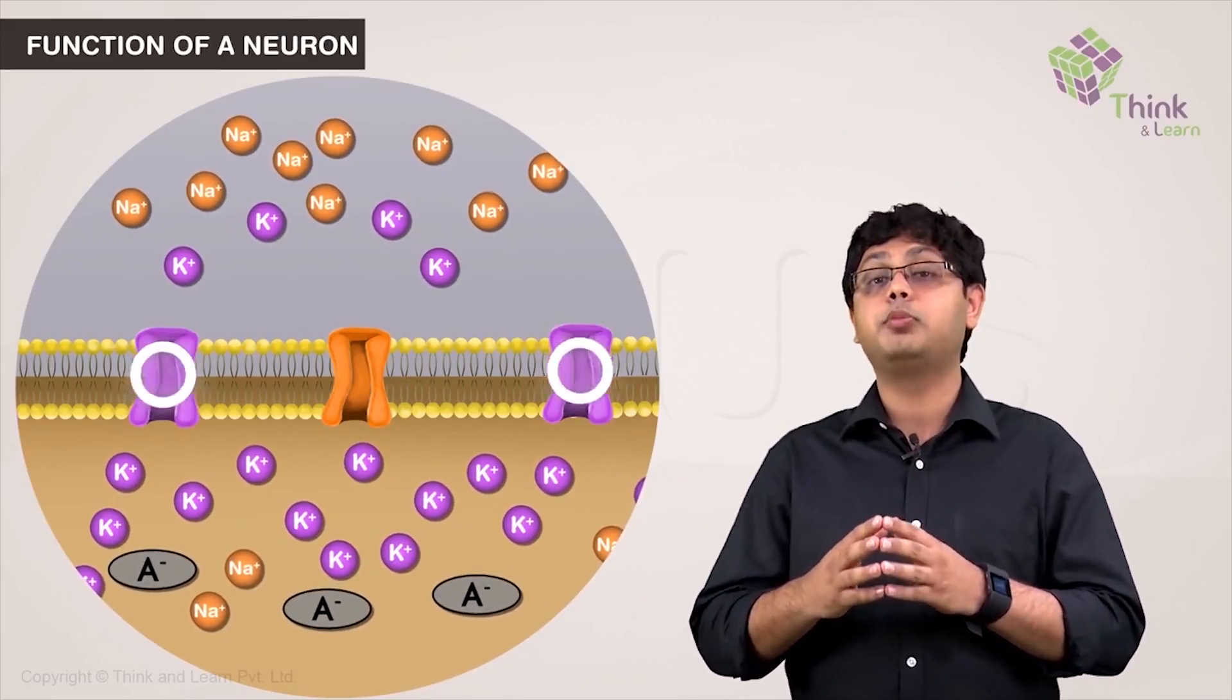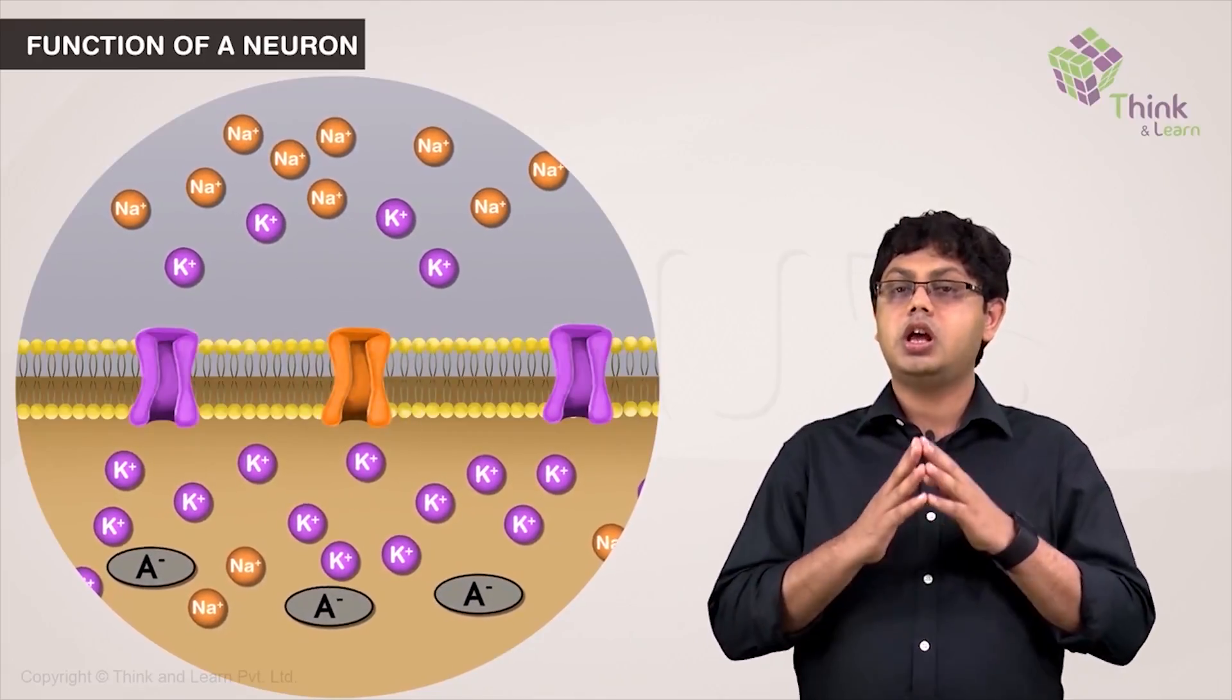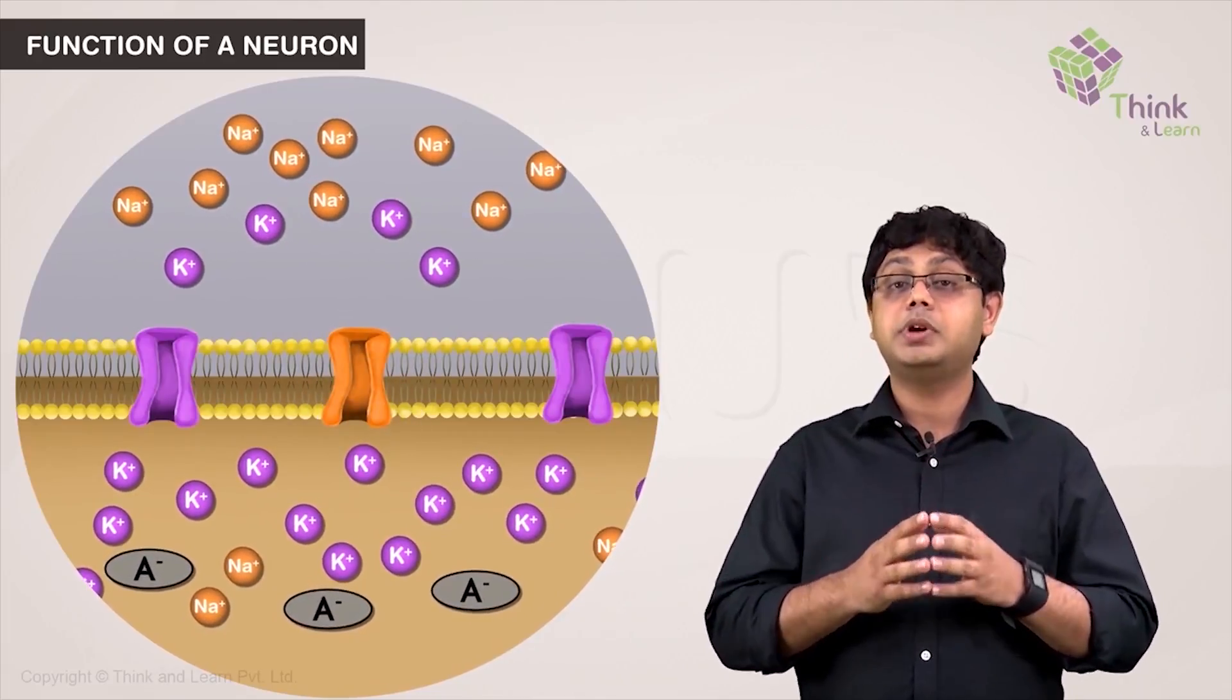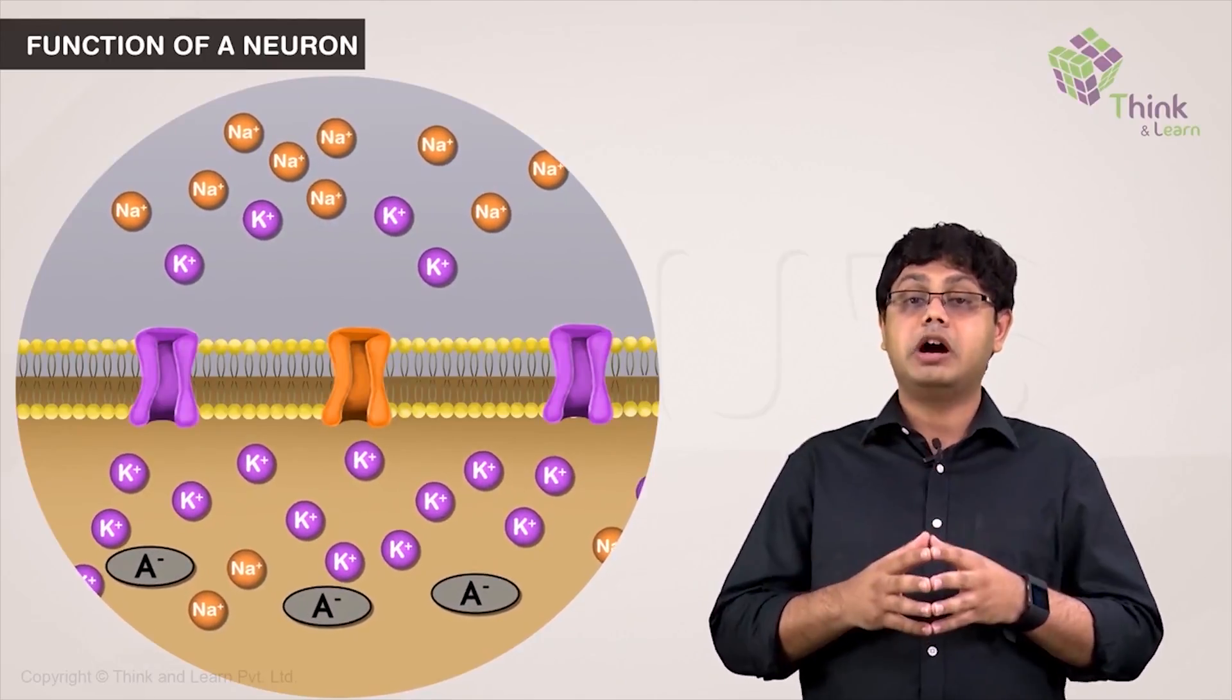If you notice, there are a lot more potassium ion channels compared to sodium ion channels. Essentially, the cellular membrane is highly permeable to potassium ions compared to that of sodium ions.